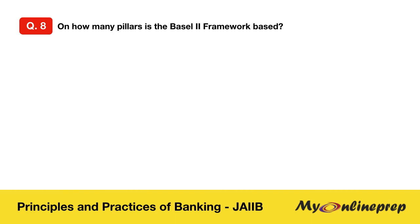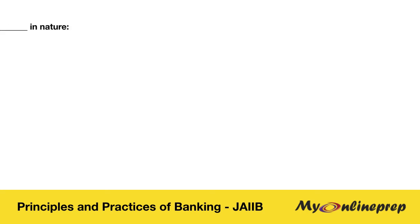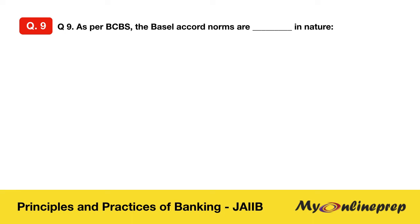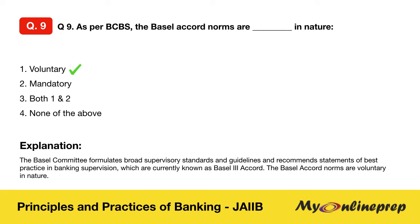Question 8: On how many pillars is the Basel 2 framework based? Options: four, three, two, or one. Correct — option two is right: three pillars. Basel 2 uses a three-pillars concept. Question 9: As per BCBS, the Basel Accord norms are dash in nature. Options: voluntary, mandatory, both, or none. Correct — voluntary. The Basel Committee formulates broad supervisory standards and guidelines, currently known as Basel 3 Accord, and these norms are voluntary in nature.